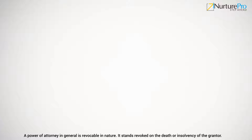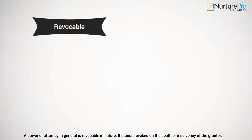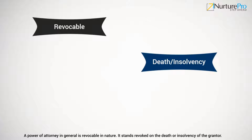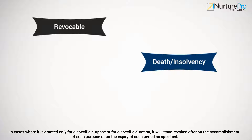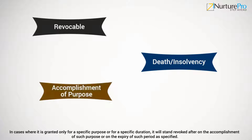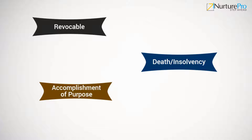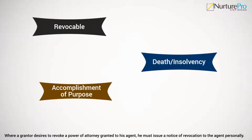A power of attorney in general is revocable in nature. It stands revoked on the death or insolvency of the grantor. In cases where it is granted only for a specific purpose or for a specific duration, it will stand revoked on the accomplishment of such purpose or on the expiry of such period as specified. Where a grantor desires to revoke a power of attorney granted to his agent, he must issue a notice of revocation to the agent personally.